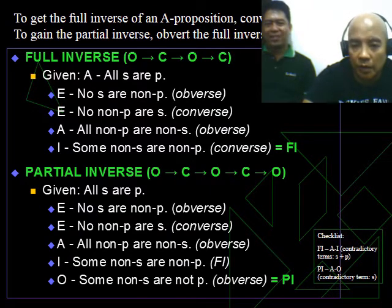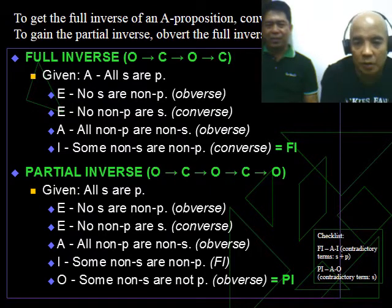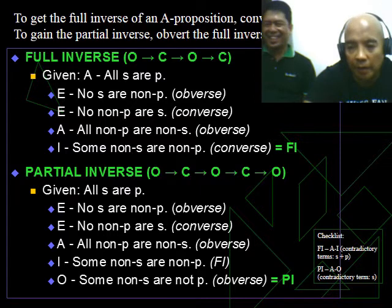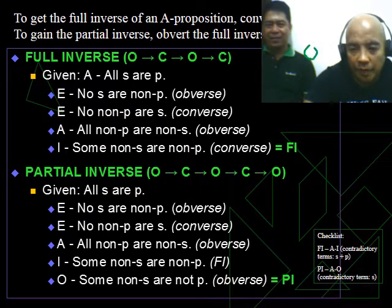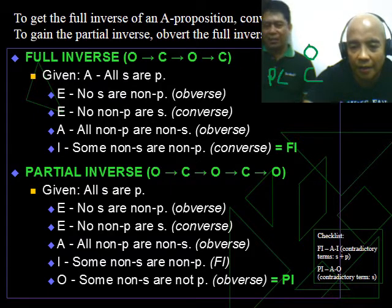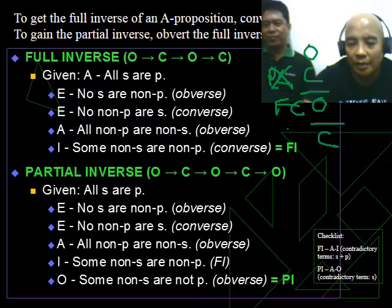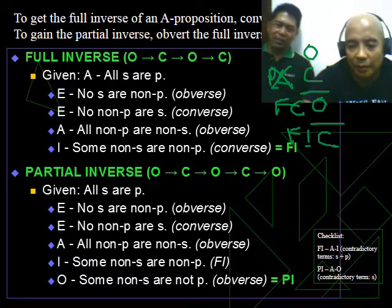Now to get the full inverse of an A proposition, you have to convert its contraposite to gain the partial inverse, then overt the full inverse. So you see here, overt then convert. That's PC. When you add one more step, FC. When you add another, that's full inverse.